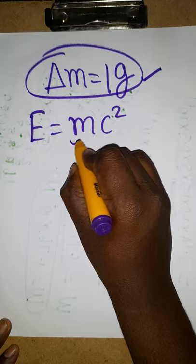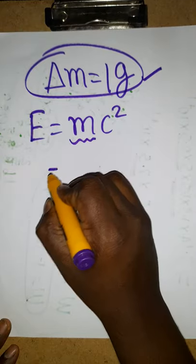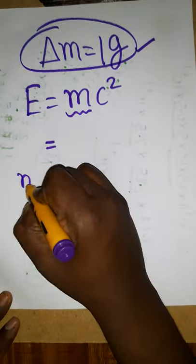Energy is equal to mc squared. This is called mass defect. We have 1 gram of mass, so mass is 1 gram.